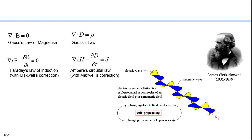Maxwell realized that a changing magnetic field would create a changing electric field, and vice versa. Once set up, the fields would self-propagate. He was able to determine the velocity of this electromagnetic wave using two parameters embedded within his equations — permittivity and emissivity. The speed he came up with was 299,792,458 meters per second, remarkably close to Ole Romer's figure for the speed of light. Maxwell suggested, based on this, that light was a form of electromagnetic radiation.